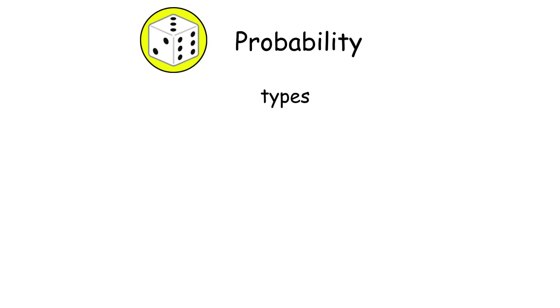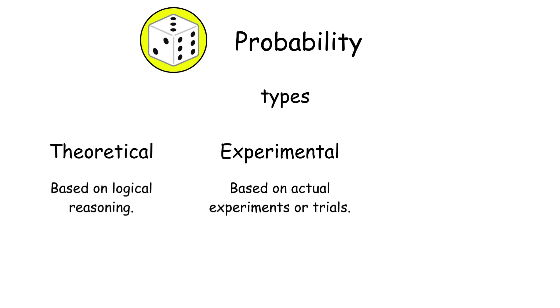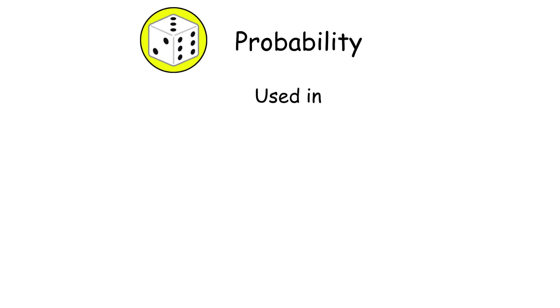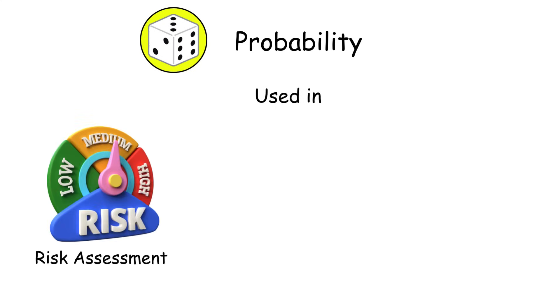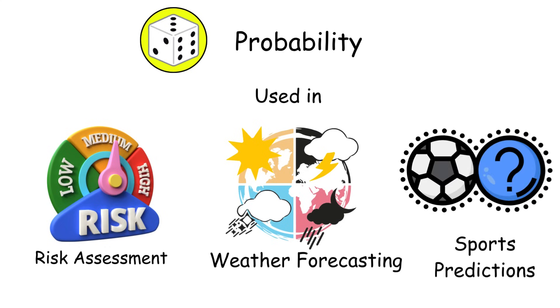There are different kinds of probability, like theoretical, experimental, and axiomatic. Probability is used in many areas, such as assessing risks, forecasting weather, and predicting results in games or sports. Understanding probability helps us make smart decisions when things are uncertain.